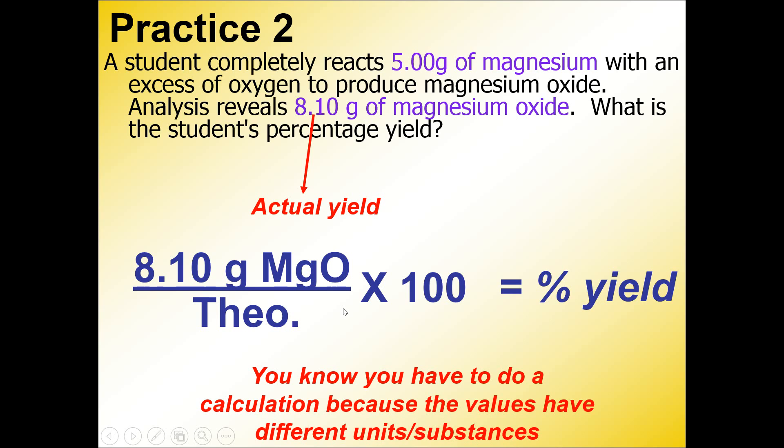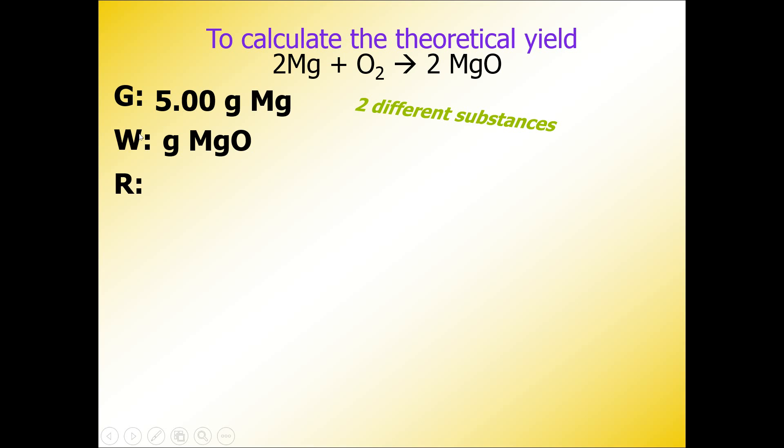Our want is grams of magnesium oxide because we're calculating the percent of magnesium oxide that was produced. We have to match up the units and substance in this actual over theoretical calculation. We're trying to predict how much we're supposed to get in our experiment.